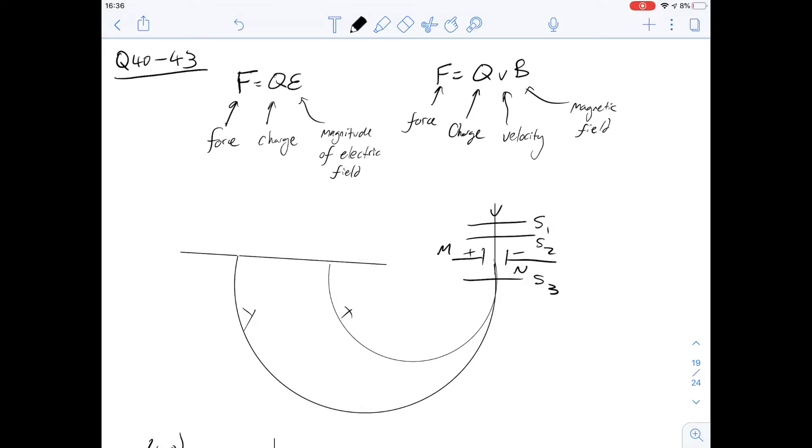Hi, I'm Carl, and in this video we're going to have a look at questions 40 to 43 of section 3 of the orange booklet. This is a question about ions being deflected through an electrical and a magnetic field.